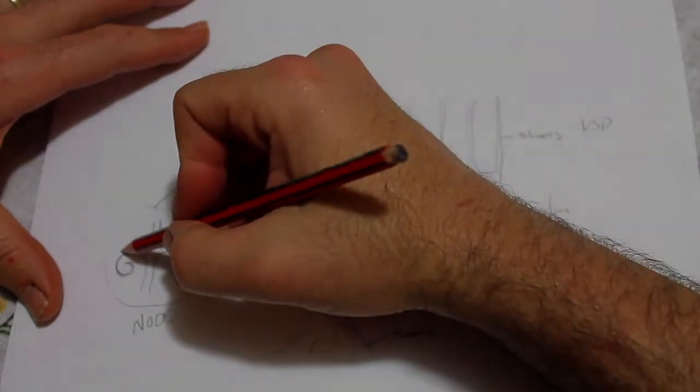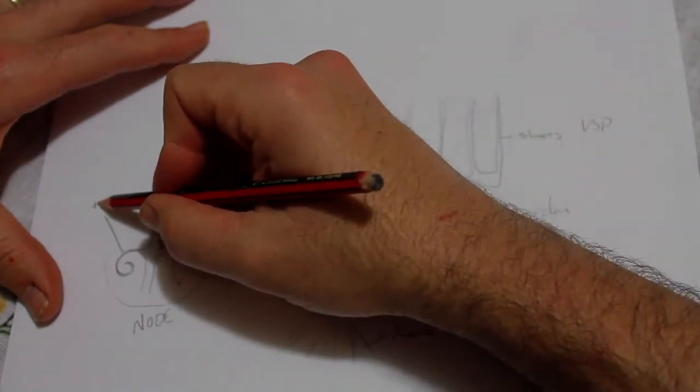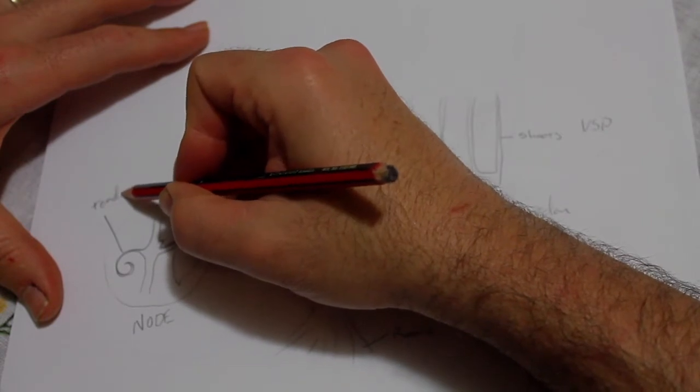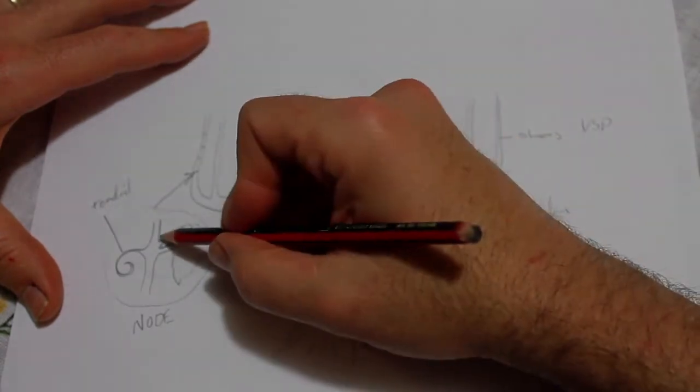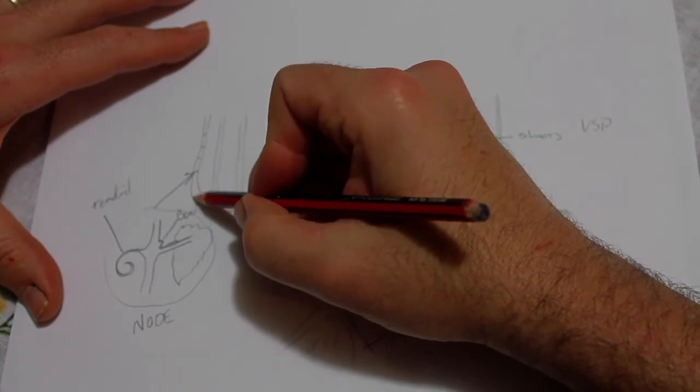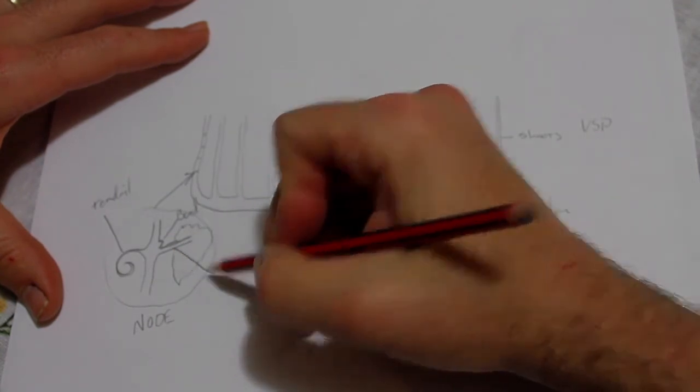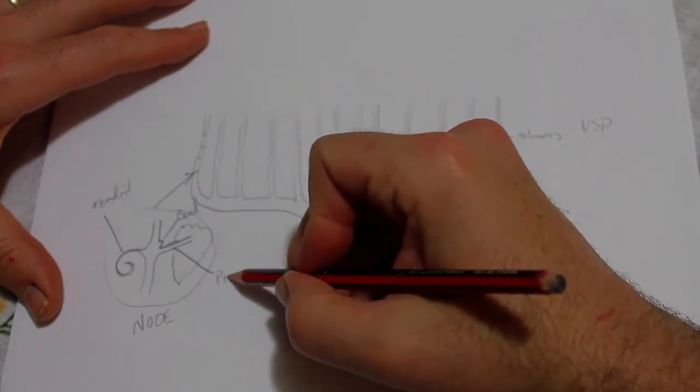In the node, as I've just told you, there is the tendril, there is the bud, and there is the petiole.